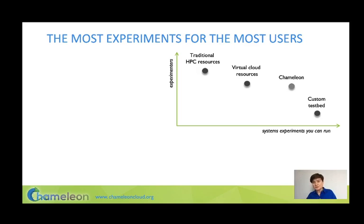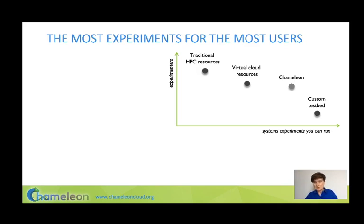Virtualized cloud resources are much more flexible, and bare metal resources like Chameleon are of course the most flexible — you don't have that hypervisor layer between you and the hardware. A custom testbed built from hardware up to support your needs might be even more flexible, but interesting to fewer users. So balancing the range of experiments against the number of experimenters is what we're trying to do. The factors influencing how many experiments you can support are hardware, how expressive your interfaces are, and support for configurability and isolation.